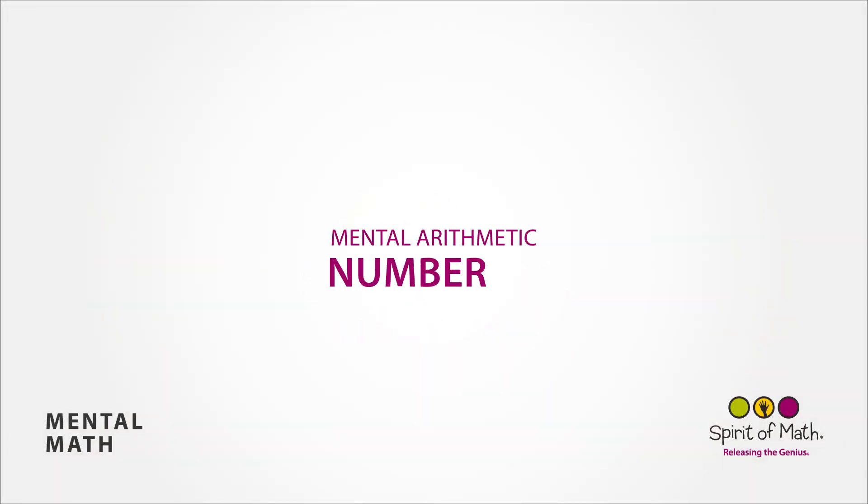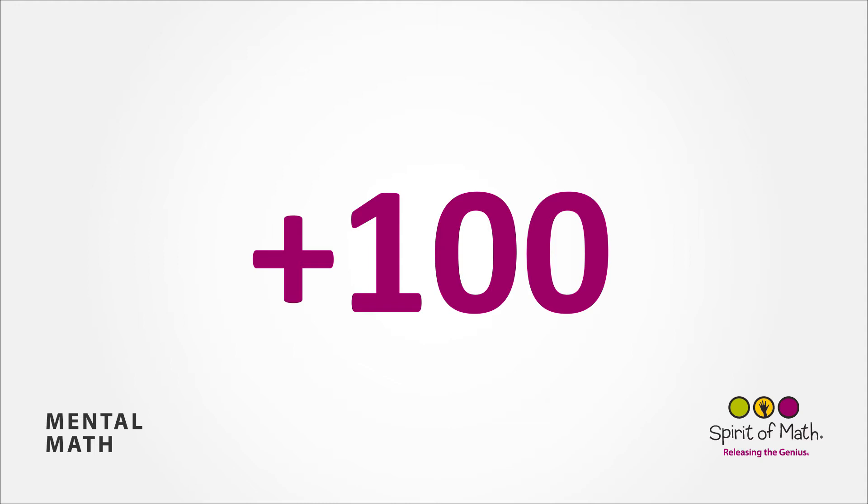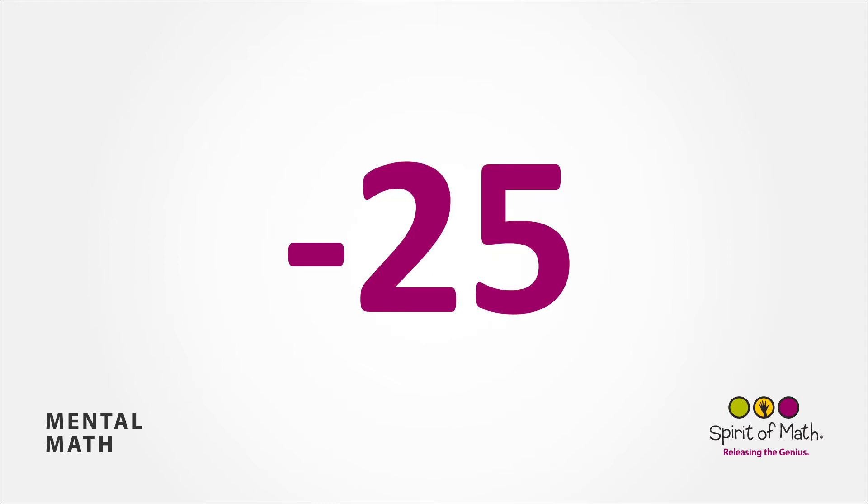Mental Arithmetic Number 88: 5 times 5 subtract 5 and subtract 5 multiply by 9, add 100 subtract 25.